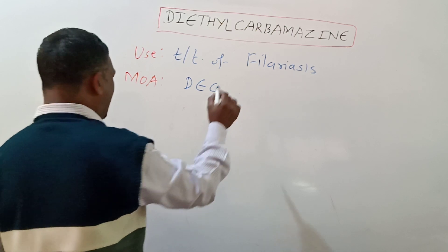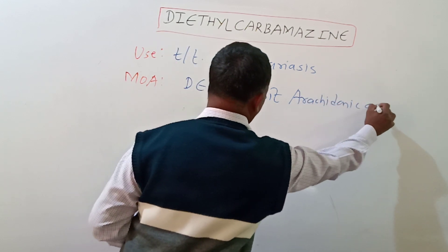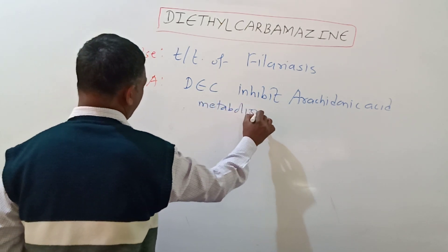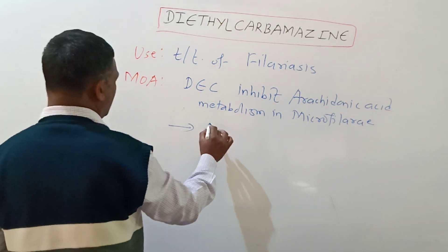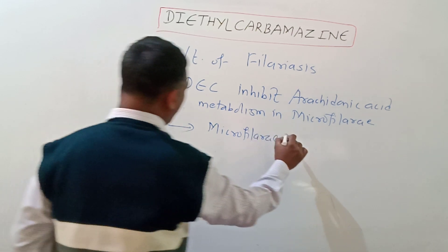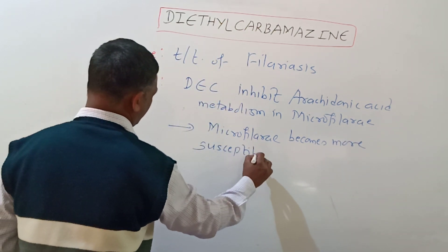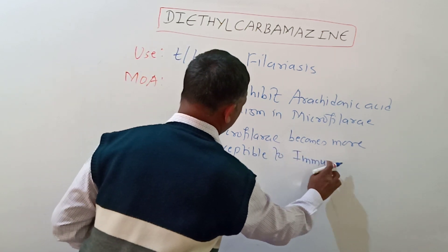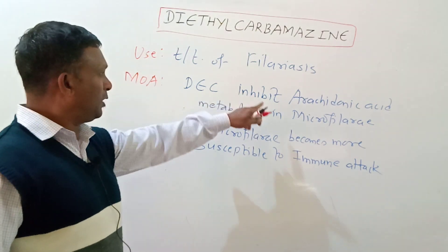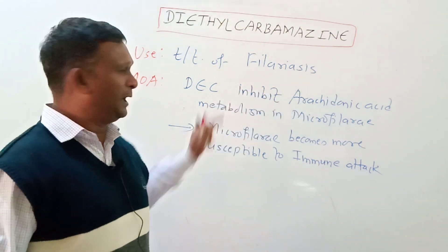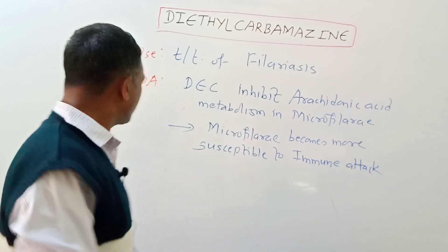Diethyl carbamazine inhibits arachidonic acid metabolism in microfilaria, due to which the microfilaria becomes more susceptible to immune attack. This is a very simple mechanism of action — inhibition of arachidonic acid metabolism in the microfilaria — which makes the microfilaria more susceptible to being attacked by the individual's immune system.